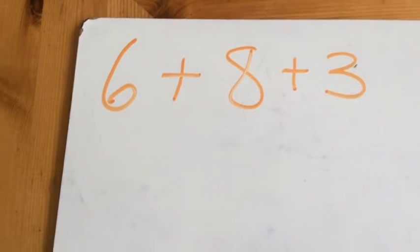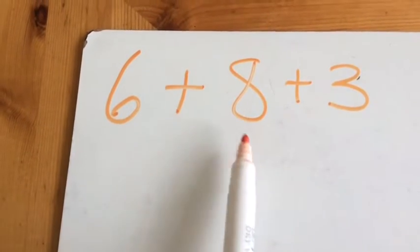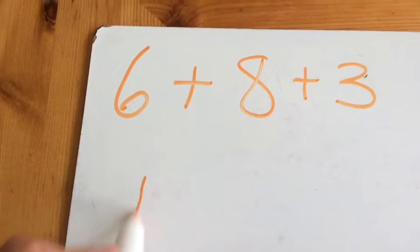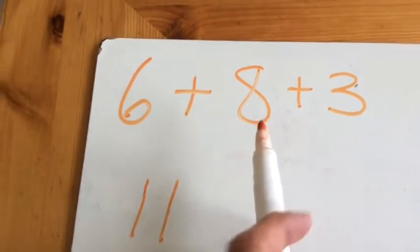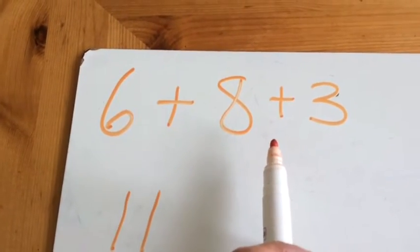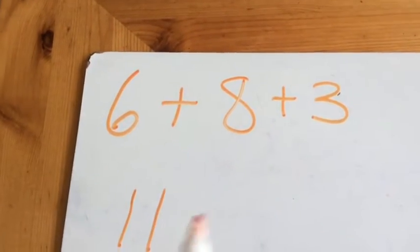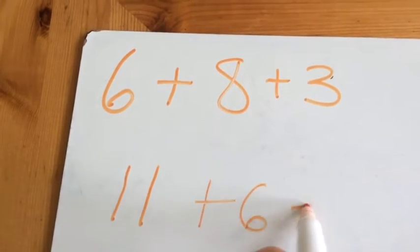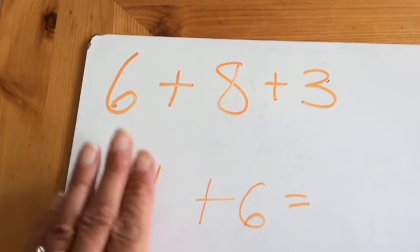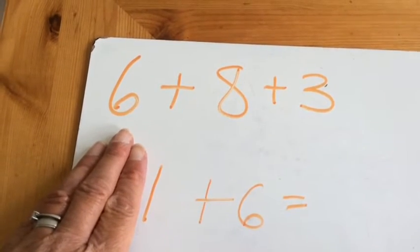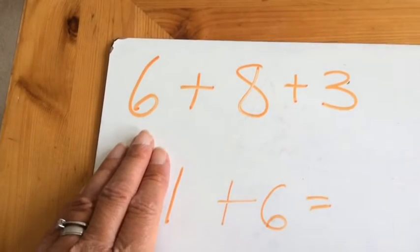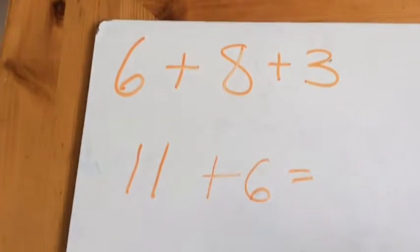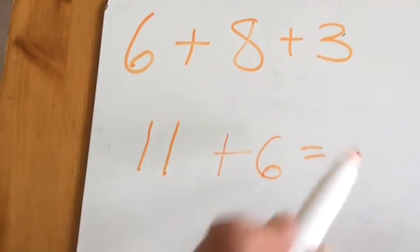You might not have spotted that fact. But maybe you spotted this number bond: 8 add 3 is 11, because 8 add 2 is 10 and you add one more to get to 11. Then you can add the 6 by being cheeky and sneaky again. You should know that 1 add 6, or 6 add 1, is 7. So 11 add 6 must be 17.